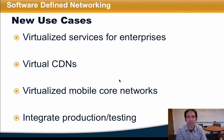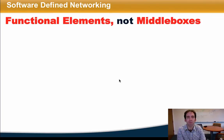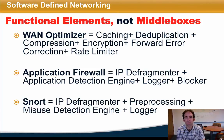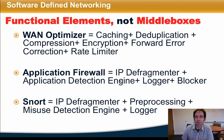New use cases include virtualized services for enterprise, content distribution, virtualized core networks, and the integration of production and testing. One way to think about NFV is that it makes it possible to create functional elements, sometimes on significantly finer granularity, as opposed to monolithic middleboxes. When we think about various middlebox functions, we can see that each of them is a combination of smaller, modular functions. One view of NFV is thus that we should be taking these individual functional elements and placing them in virtual containers rather than deploying monolithic middlebox functions.